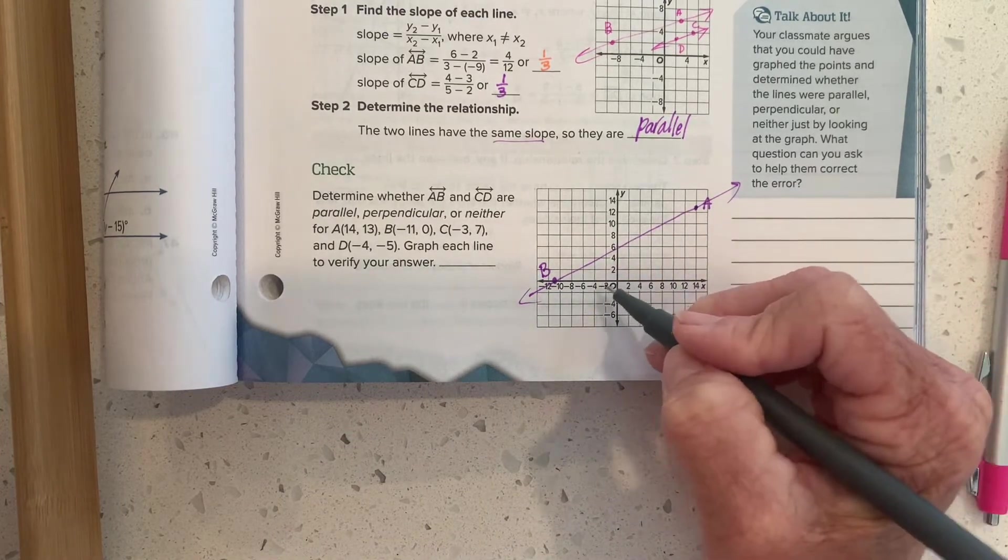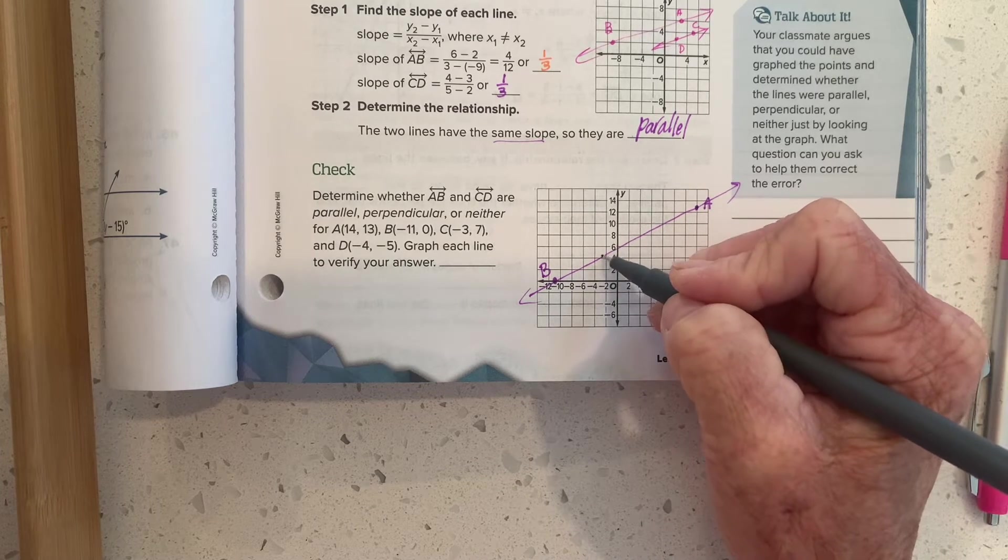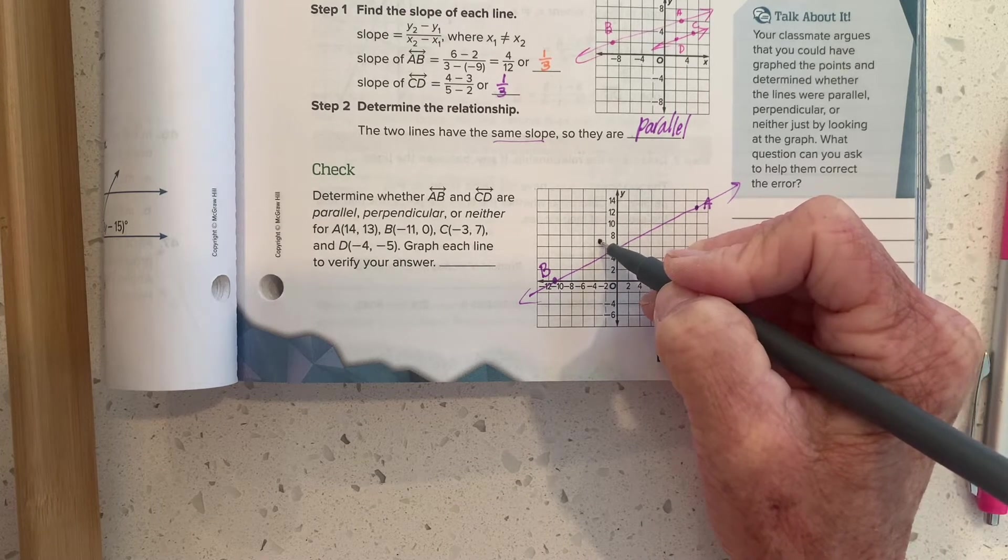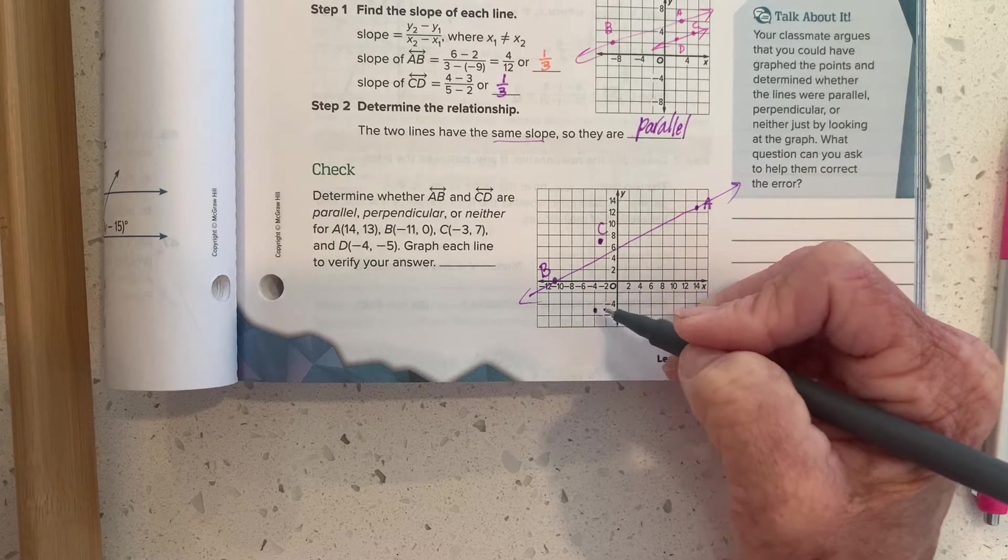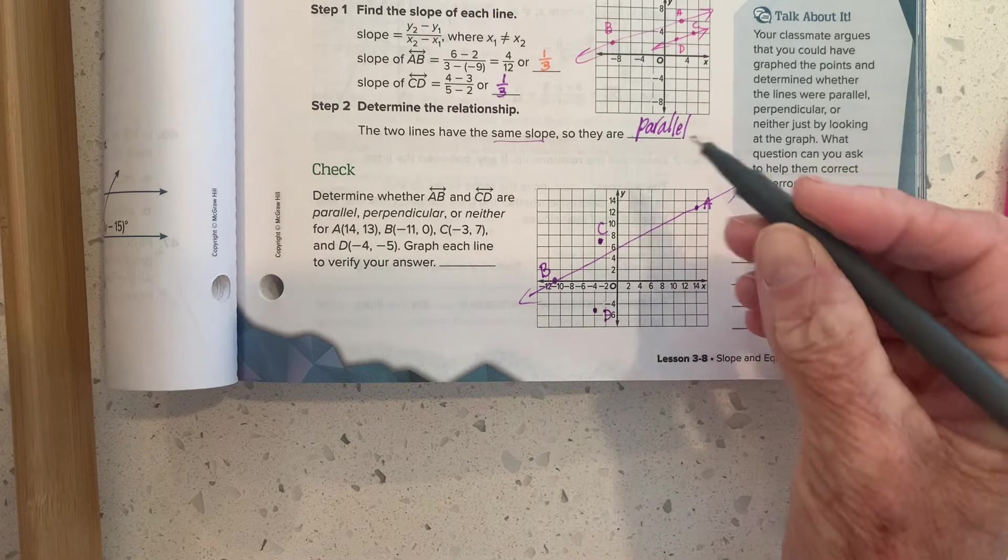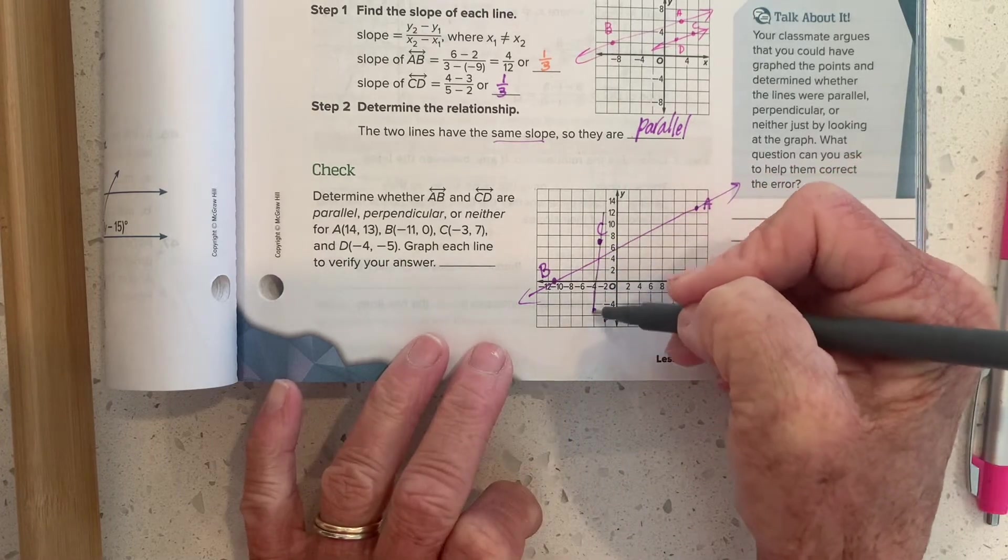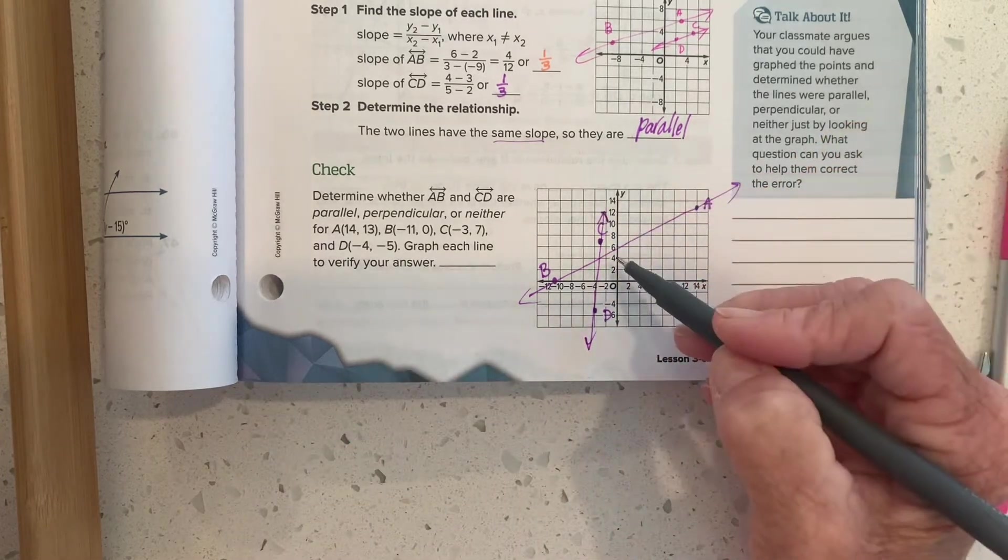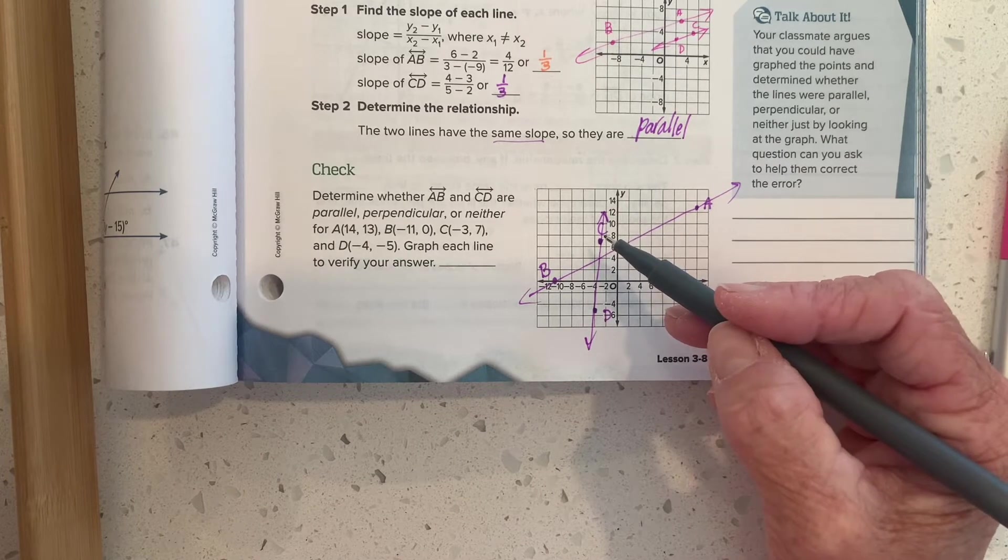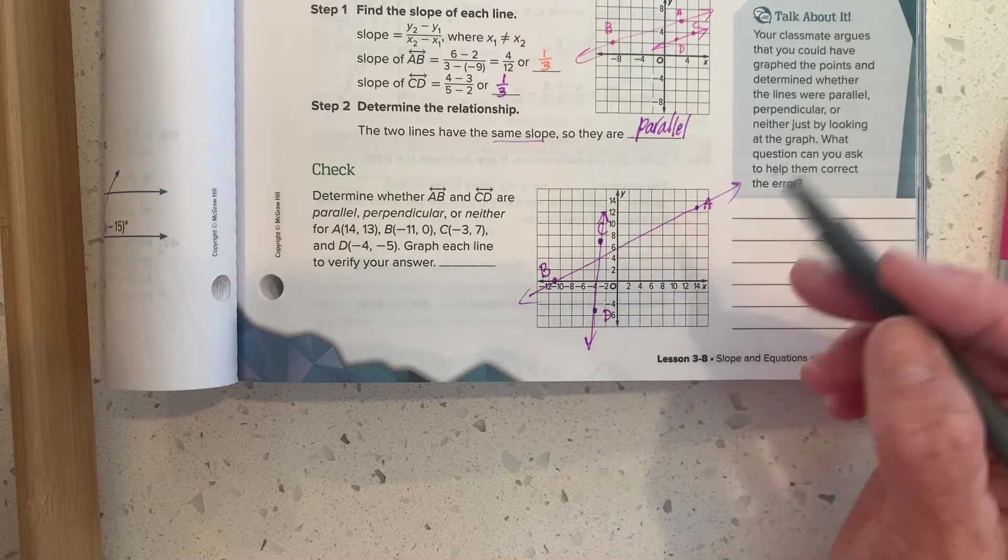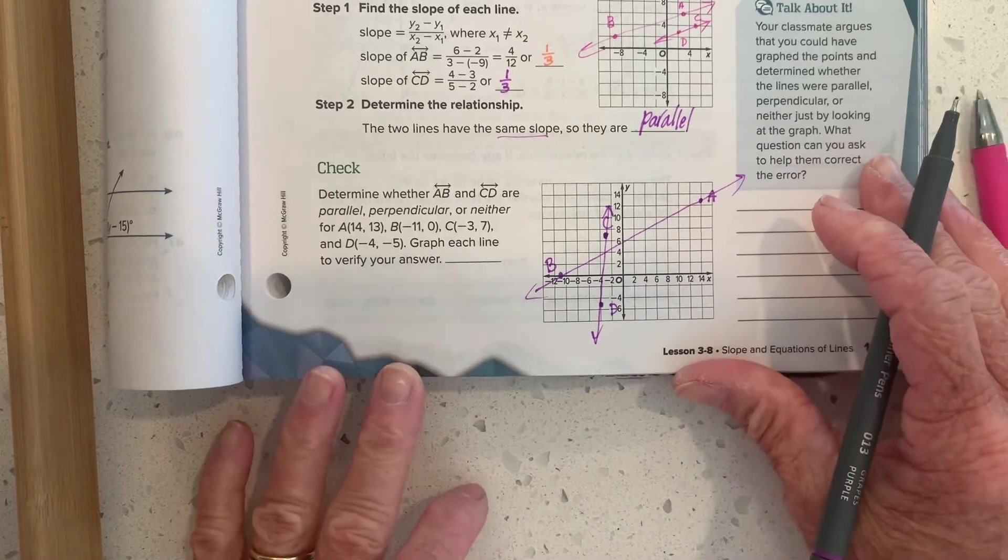C is at negative three, positive seven, right there in the middle of the box. And D is at negative four, negative five. Now, if I'm just looking at this, those don't look, certainly don't look parallel. And they don't look perpendicular either. But let's verify it using the formula.